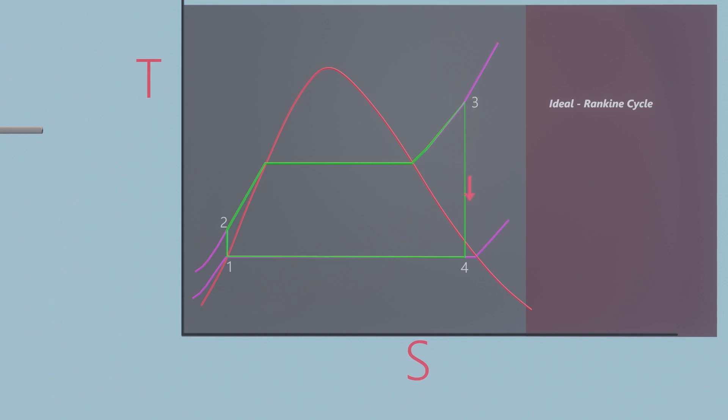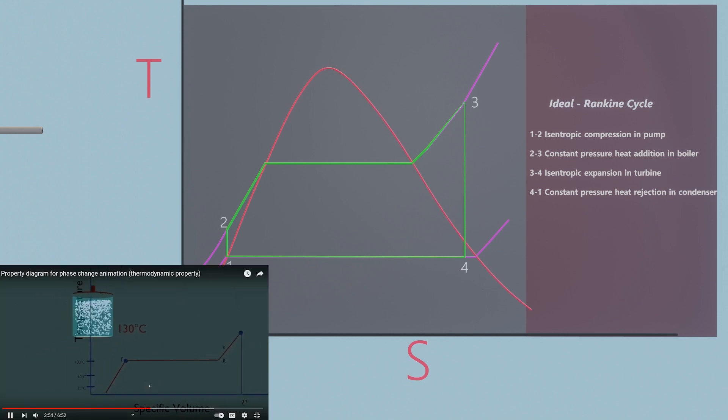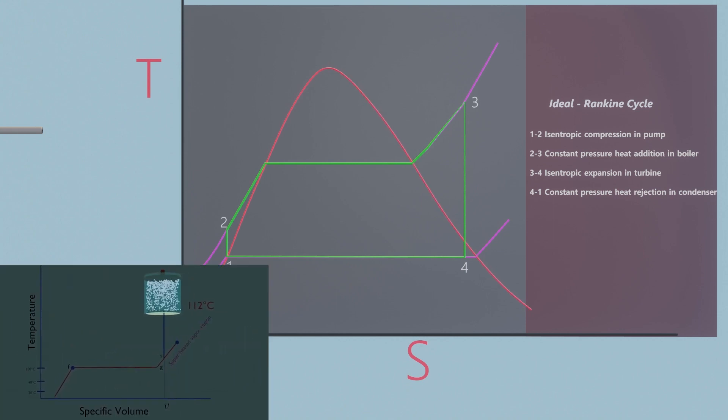The ideal Rankine cycle does not involve any internal irreversibilities and consists of the following four processes. Here, this cycle is executed within the saturation dome of a pure substance. You should have some basic knowledge on the saturation dome. Check the video link in description to relearn about it.